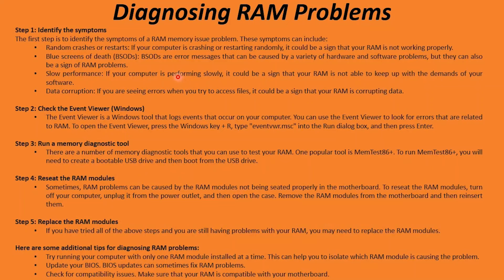Now let's talk about RAM — random access memory. Some symptoms of RAM going bad include random crashes or restarts, blue screen of death (with error codes you can look up), and slow performance, which can indicate memory is failing. If you have two or four DIMMs and one is going bad and not reading properly, you'll have reduced memory and less for your applications to use. Data corruption is another symptom: files are held in RAM while you work on them, and if things are getting corrupted before saving, it could indicate the RAM is causing the corruption.